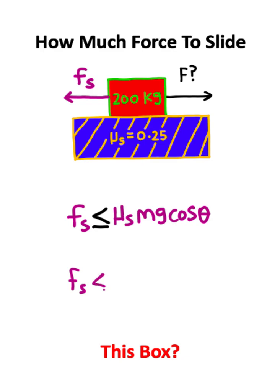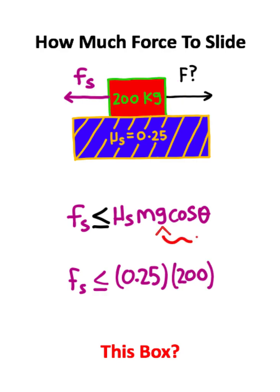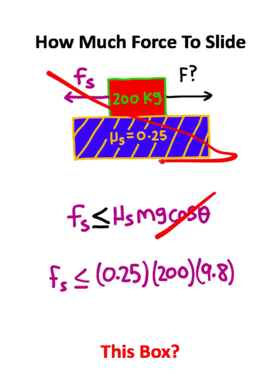So to solve this, let's go ahead and plug in the numbers. The coefficient for static friction is given as 0.25. The mass of the box is 200 kilograms. Assuming we are on Earth, gravitational acceleration is always the same. It's 9.8 meters per second squared. And we can just get rid of this cosine term since we're not on an inclined plane. Instead, we're on a flat surface.